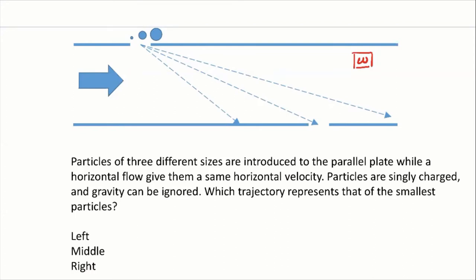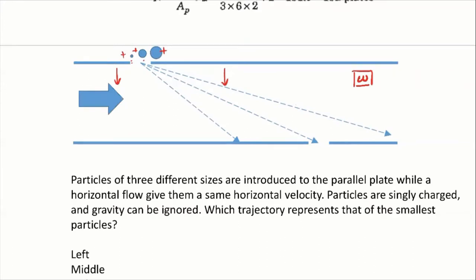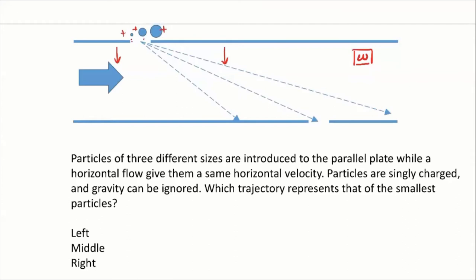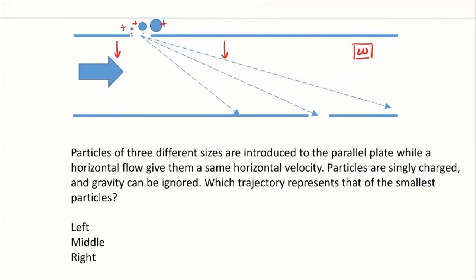When we measure particle size distributions, what we do is charge these particles — no matter what their size, we give them only a single charge. No matter how large they are, a device can give them just a single charge. If they have a single charge, we can calculate the migration velocity of the particle in the electrostatic field. This is called the electrostatic classifier.